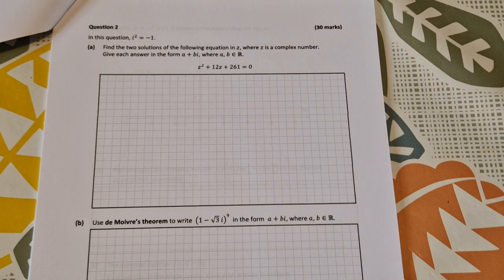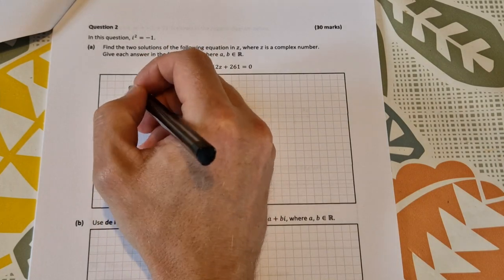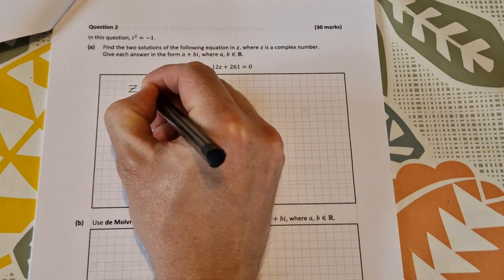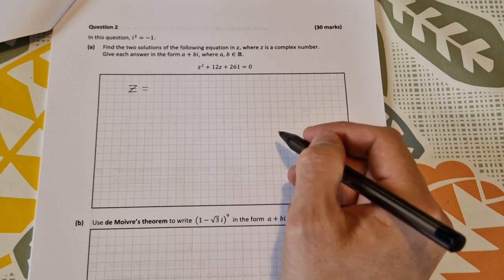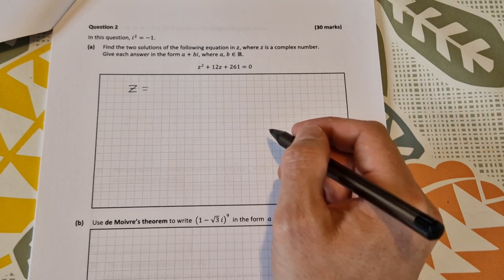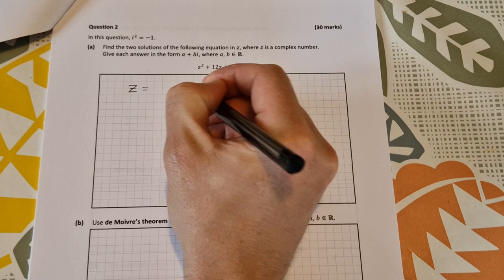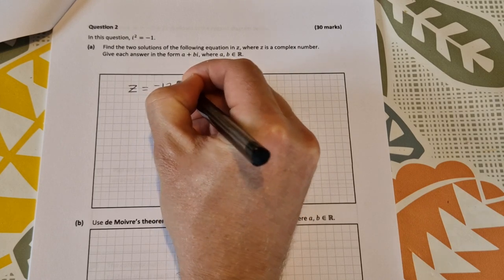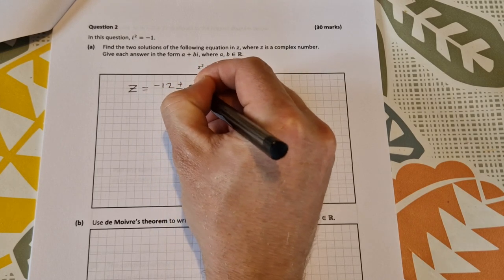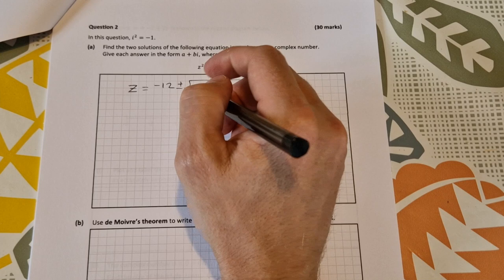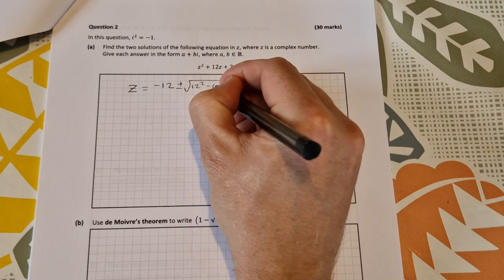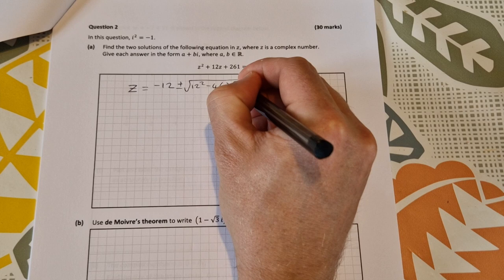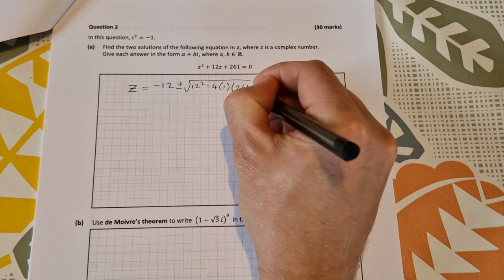So there's three different ways you can do this. The easiest way, in my opinion, is to use the quadratic formula. So I'm going to go ahead and do that. So z is going to be equal to minus b plus and minus the square root of b squared minus 4ac all over 2a. You should know that. So it's minus 12 plus and minus the square root of b squared, so that's 12 squared minus 4 times a is 1 times c, which is 261.